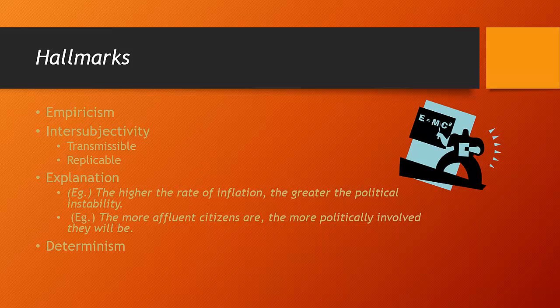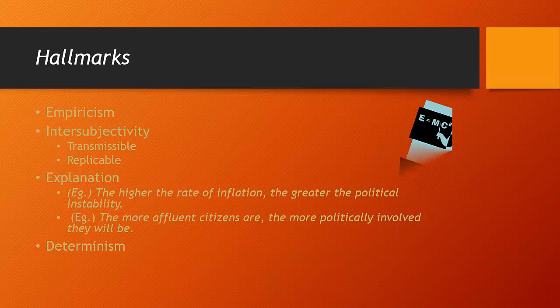Empirical research involves searching for a recurring pattern in the way that phenomena are related to one another. The aim is to generalize beyond a particular act or time or place, and to see the particular as an example of something more general. Finally, the last hallmark of the scientific method is determinism. Determinism is only an assumption — it cannot be proved. But the search for recurring regularities necessarily entails the assumption of determinism, i.e., the assumption that there are, in fact, recurring regularities in political behavior. The assumption of determinism is valid to the extent that research proceeding from this assumption produces knowledge claims that withstand rigorous empirical testing.